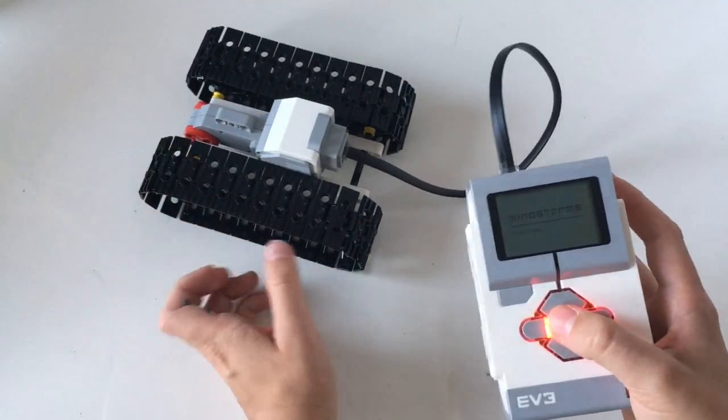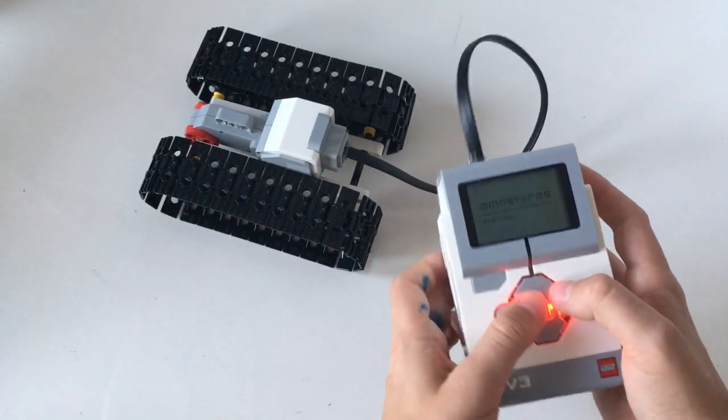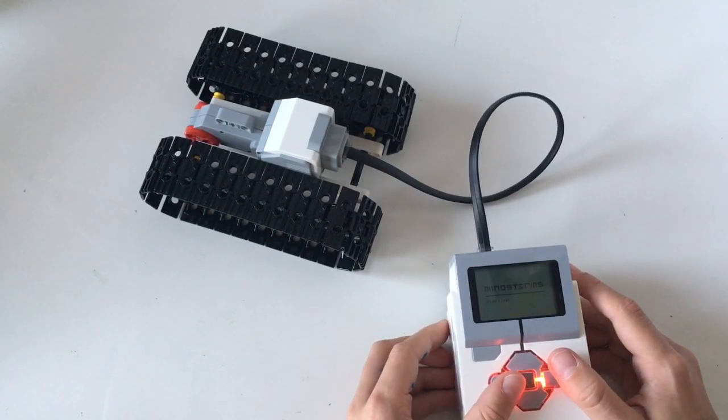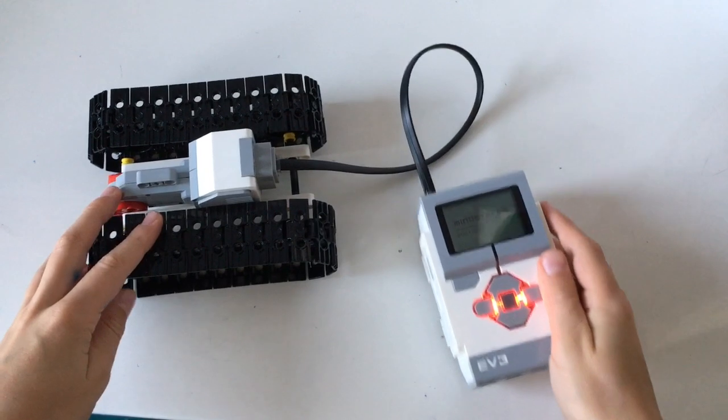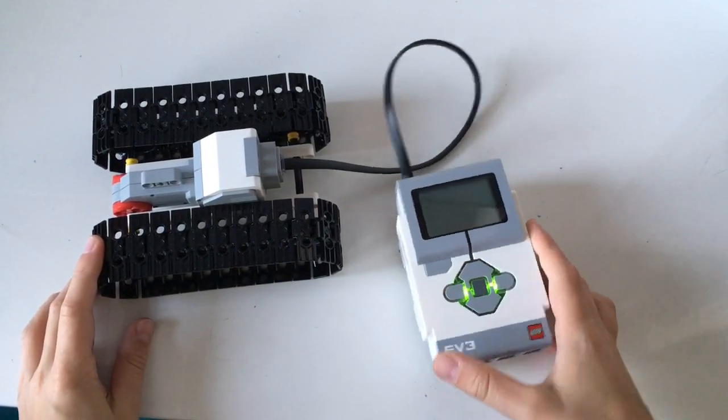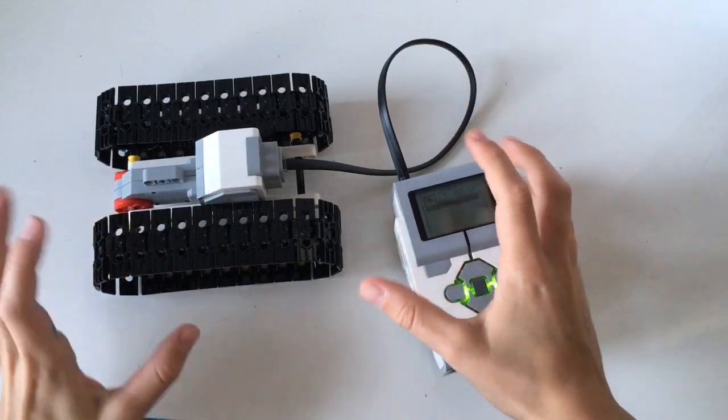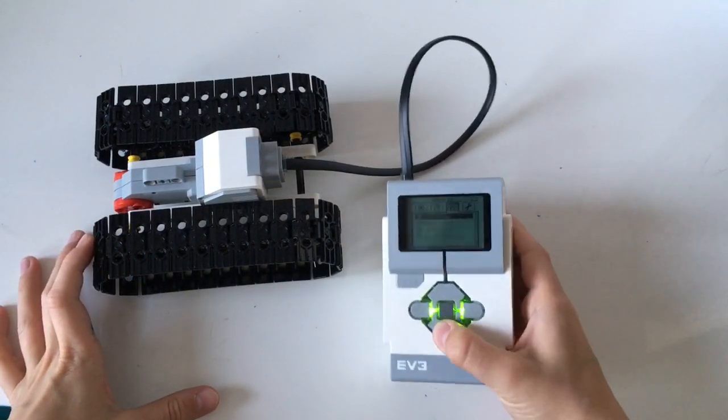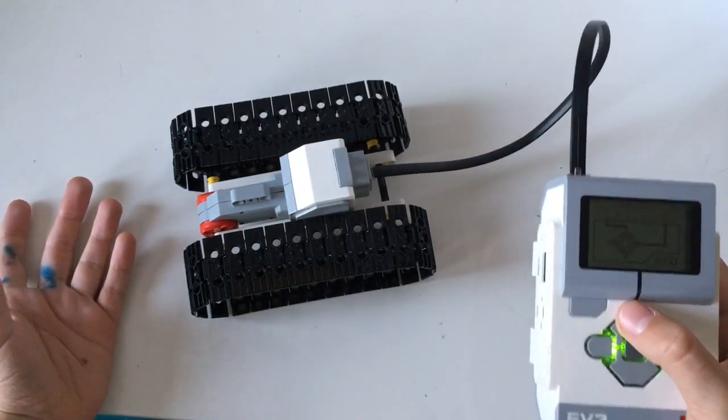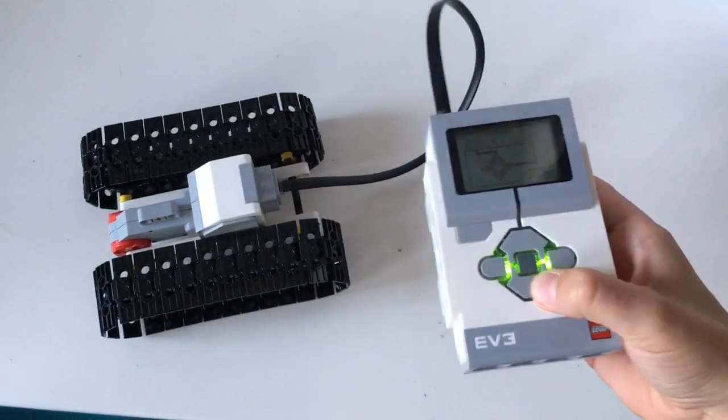So let's turn the LEGO Mindstorm block on. And there, it turned on. So now we go to the module control and we use the up and down arrows to control this crawler like this.